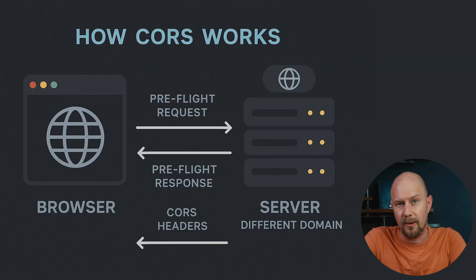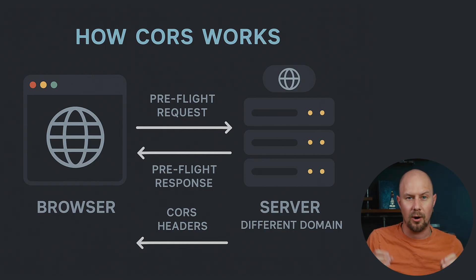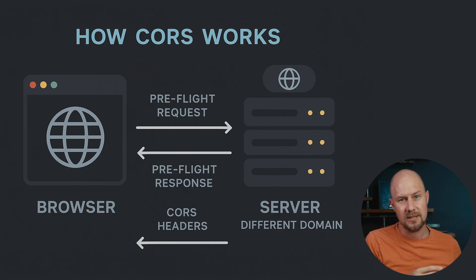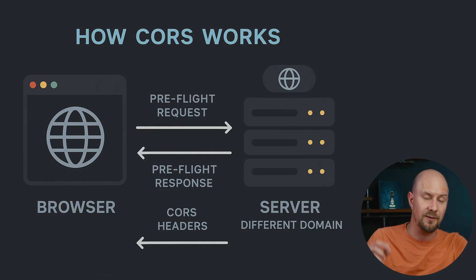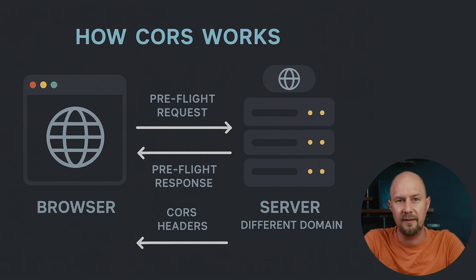There are two different types of CORS requests. The first is called a simple request, and that happens when you use safe methods like GET or POST, sending only basic content types like application/JSON. The browser adds the origin header and sends it off — no extra steps involved. The second type, which is a bit more complicated, is called a preflight request. A preflight request happens when you're using methods like PUT, PATCH, or DELETE, or when you're sending different headers like an authorization header or an API key. Before sending the actual request, the browser sends a special OPTIONS request, basically asking the server: is it okay if I send this kind of request from that origin? The server responds to that OPTIONS request with the correct CORS headers, and if it doesn't, the real request doesn't get sent at all. You'll often see these OPTIONS requests in the network tab when debugging — those are preflight CORS requests.